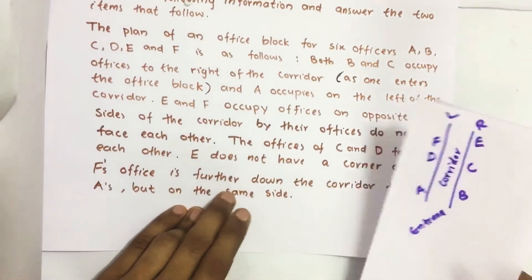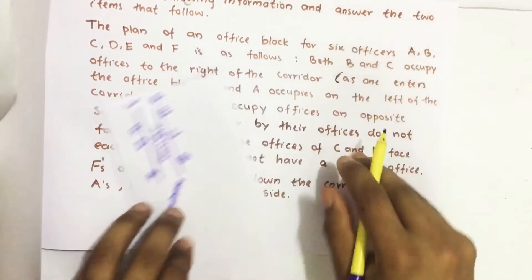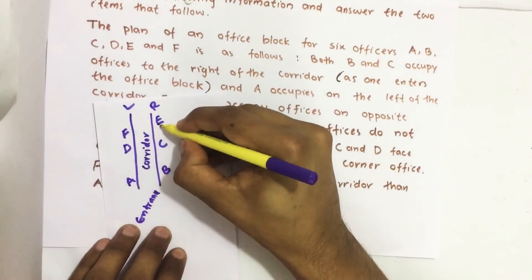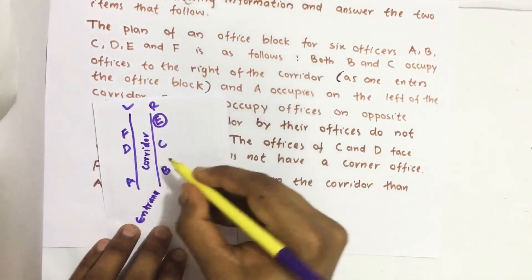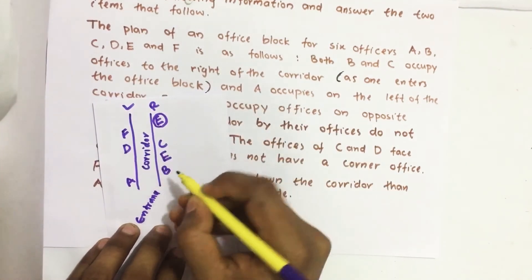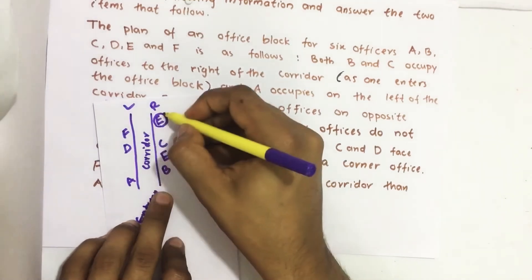E does not have a corner office. E does not have a corner office means this E should not be here. It should be here. Neither on this corner nor on this corner.